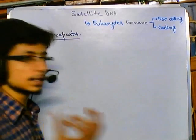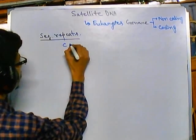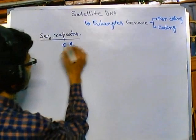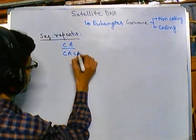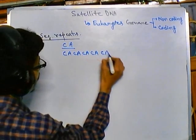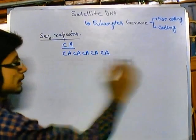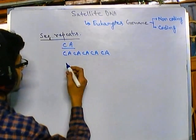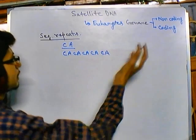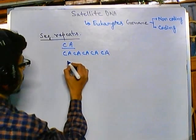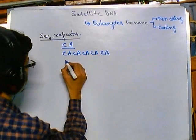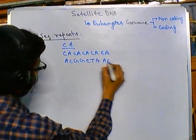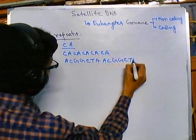The repeats can be made up of, say, cytosine and adenosine. So the repeat could look like: C-A-C-A-C-A-C-A — a stretch of repeat sequences. Or it could be a repeat sequence like A-C-G-G-G-C-T-A-A-C-G-G-C-T-A and so on — a six-nucleotide repeat stretch.